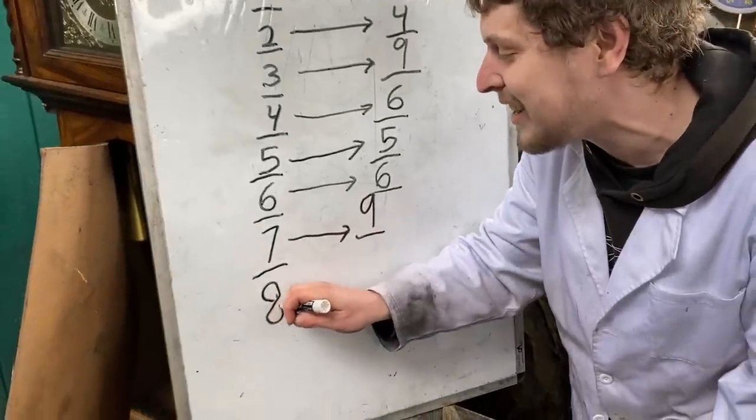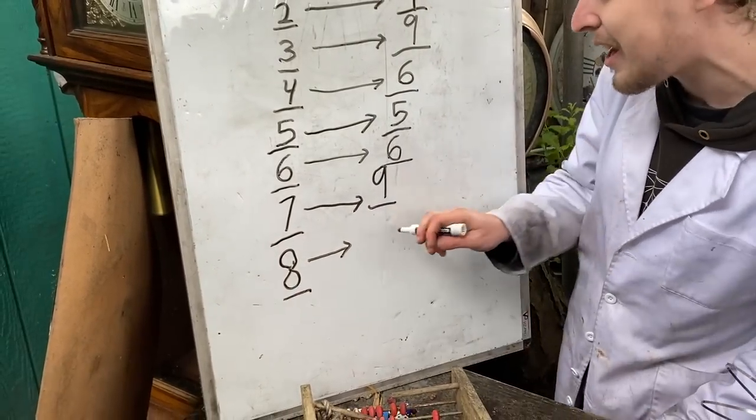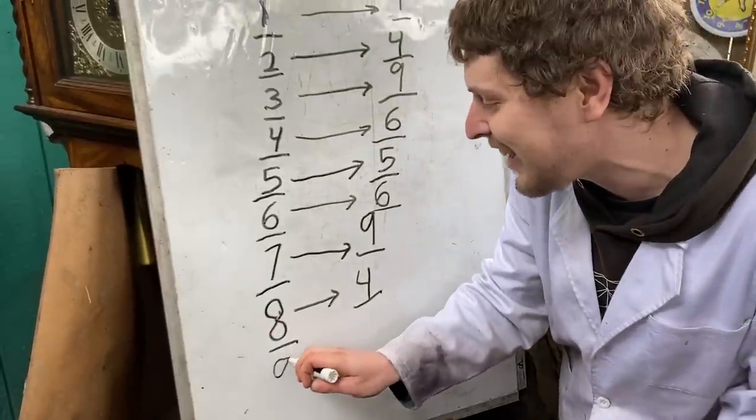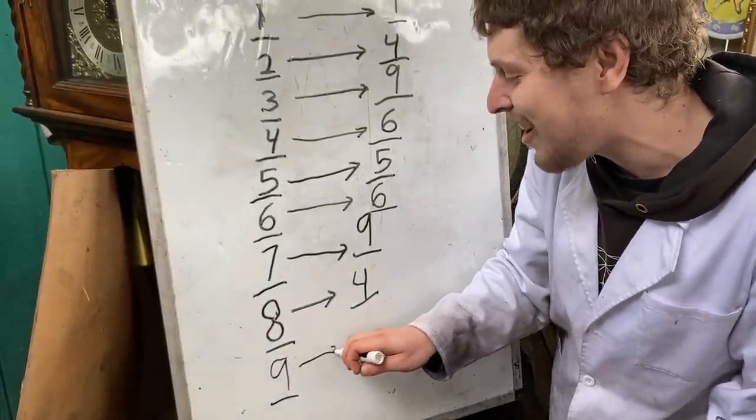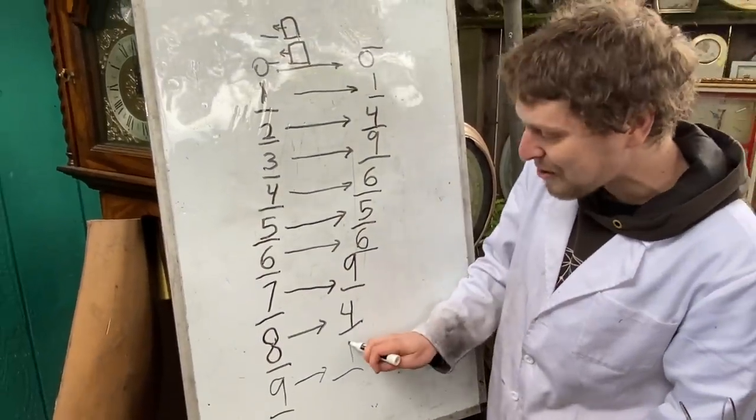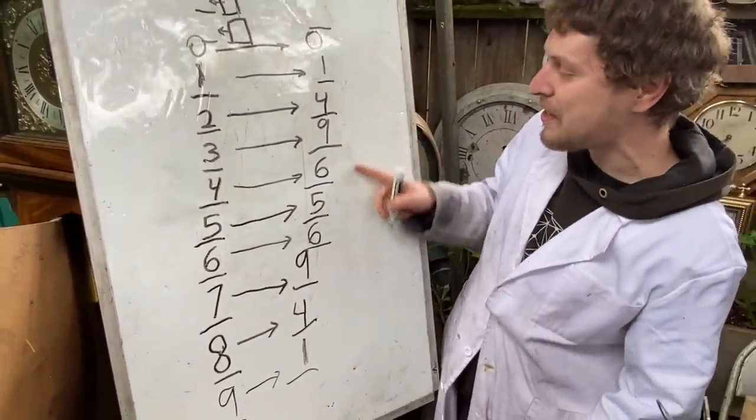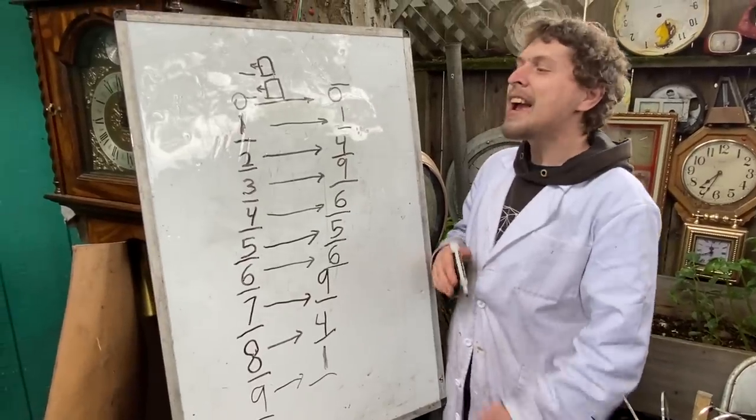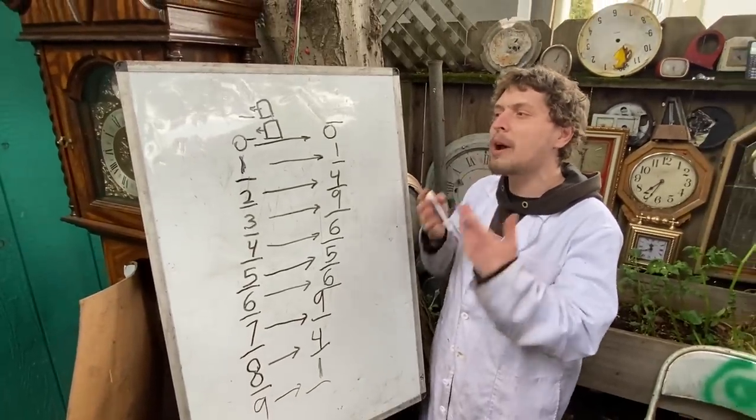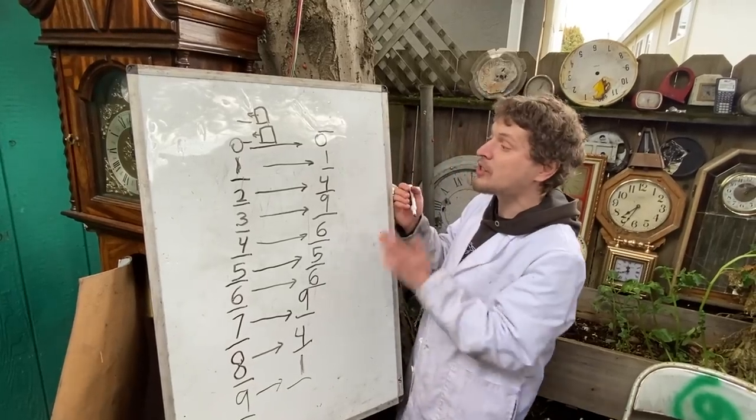And eight times eight is 64. So numbers ending in eight have their square ending in four. Another repeat. Nine is 81. Those would end in one. Another repeat. And so everything that hasn't been listed on this side so far can't be the end of any square number. Because a square number must be a number ending in one of these times itself.